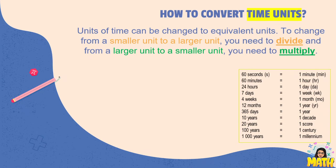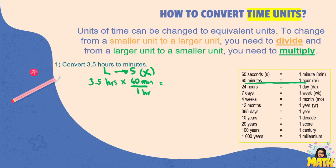Let's have an example. Convert 3.5 hours to minutes. So hours to minutes means larger unit to smaller units kasi mas mahaba naman talaga yung oras compared sa minutes. So larger to smaller units, we'll be using multiplication here. So 3.5 hours to minutes, we can have 60 minutes in one hour. Multiply that, we can have 3.5 times 60.